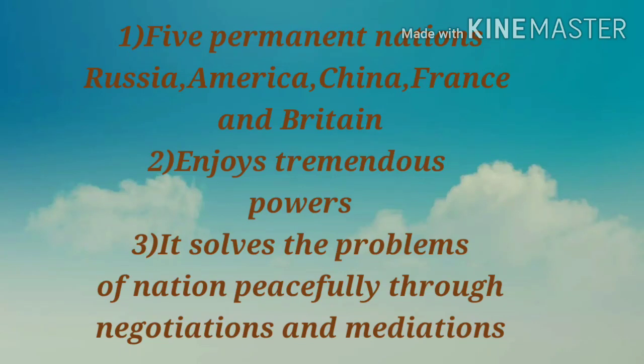These nations have a special power known as veto power — it means they can stop any kind of legislation at any point in the United Nations. The five permanent nations who hold veto power are France, America, Russia, China, and Britain. Because they have veto power, they are considered to be the most powerful countries compared to other nations, and they enjoy tremendous power.